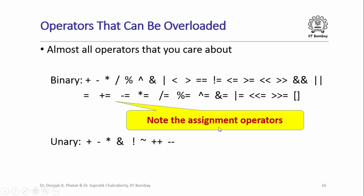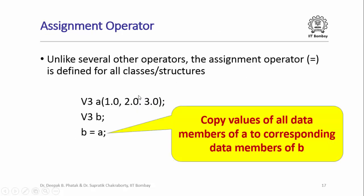Which operators can be overloaded in C++? Almost all operators you care about — there is a long list of binary and unary operators that can be overloaded in the same way as shown for star and the class. Interestingly, several assignment operators can also be overloaded. This is particularly interesting because unlike other operators, the assignment operator is already defined for all classes and structures.